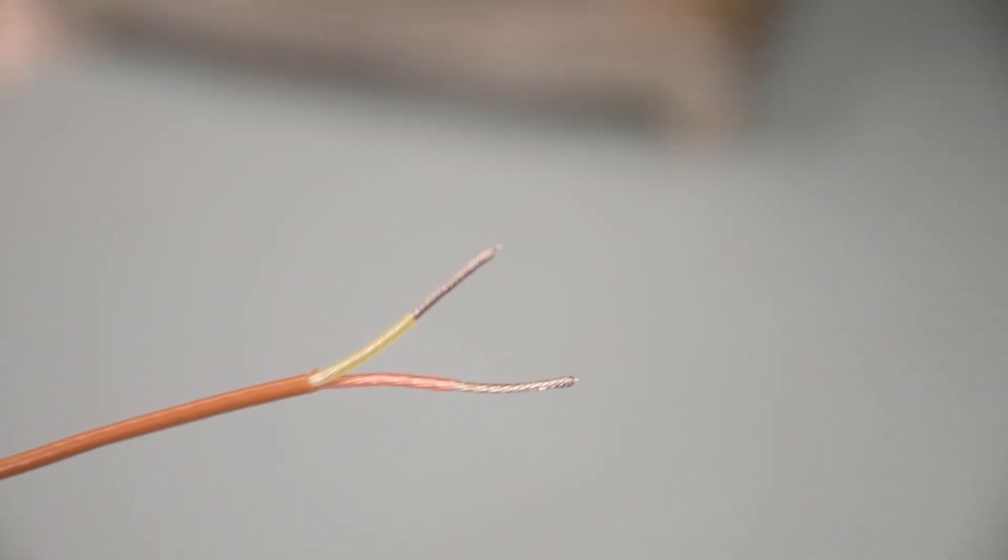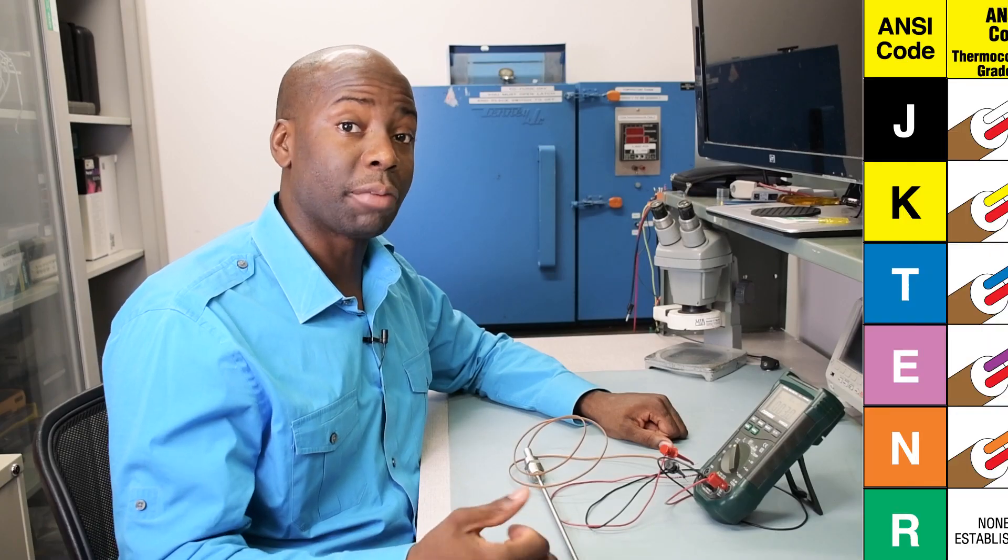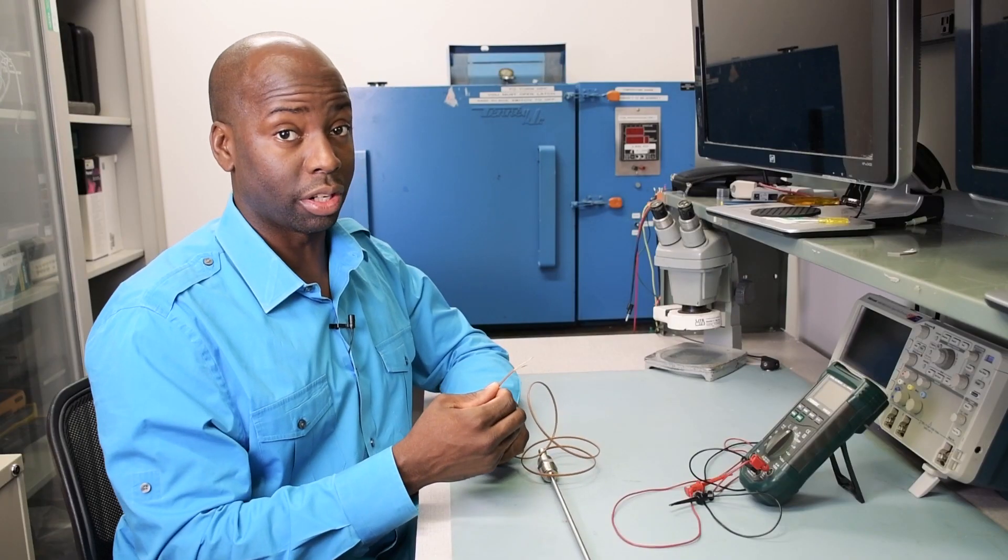One wire is colored with a red insulation and another wire is colored with a yellow insulation. If I check my thermocouple color code chart, a K-type thermocouple has a yellow and a red insulation. We might have a thermocouple here, but let's dig deeper.